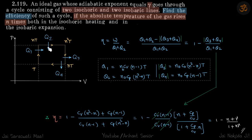The least temperature in this cycle is at the starting point. In isochoric expansion, it's given that temperature increases n times. So if the temperature is t here, it becomes nt here.